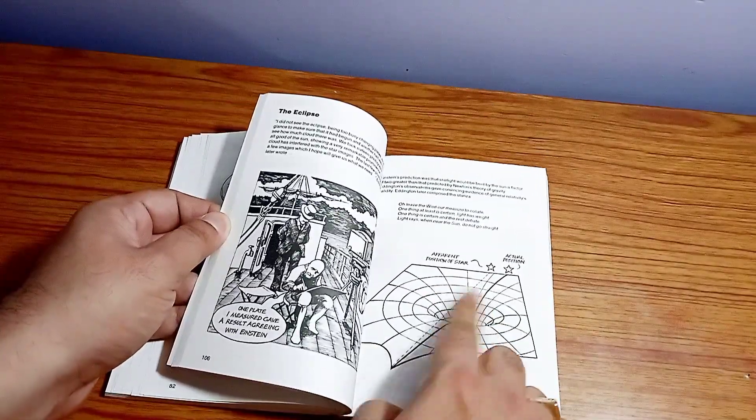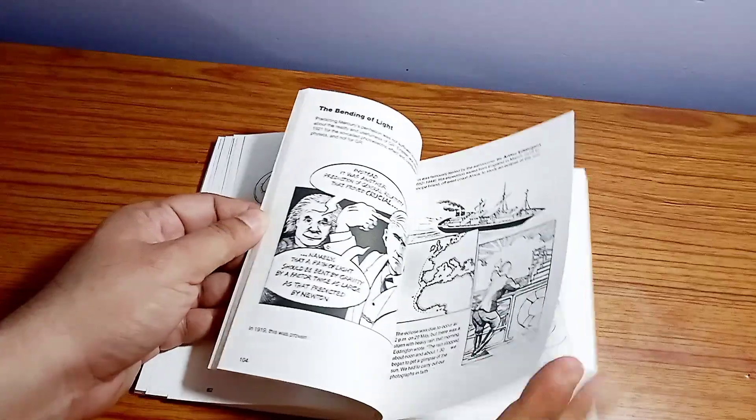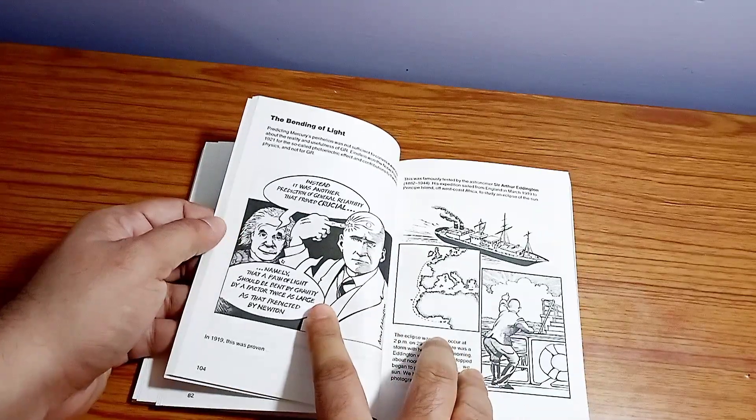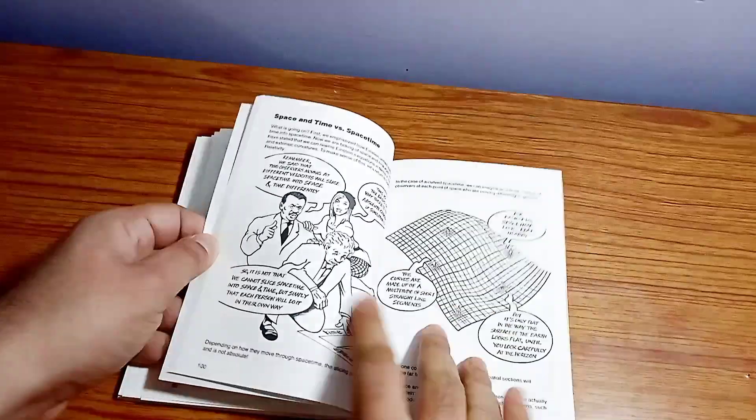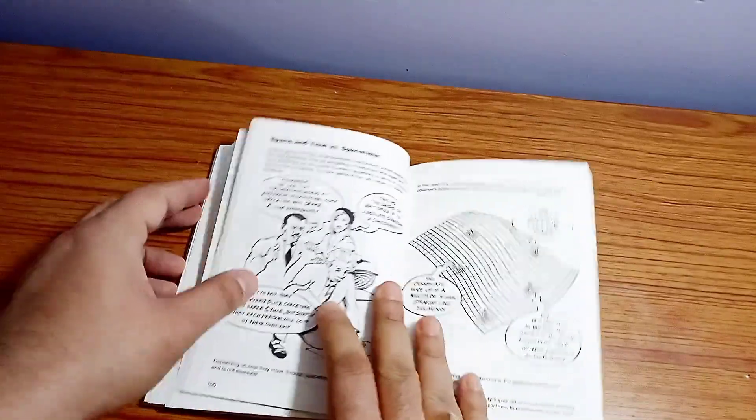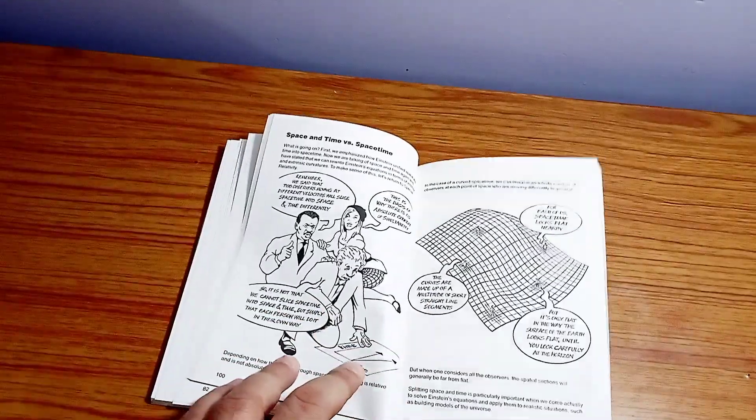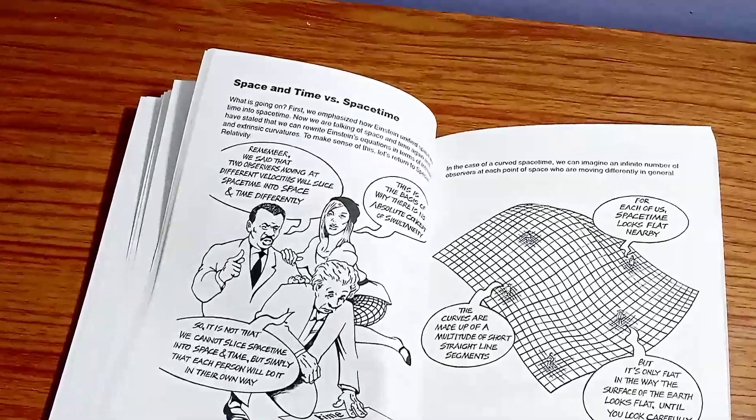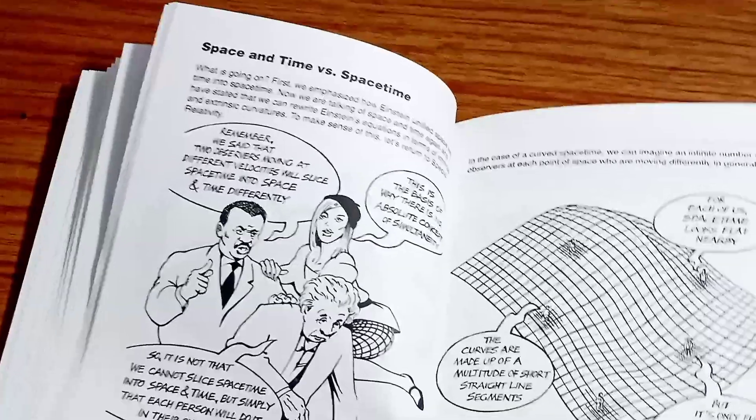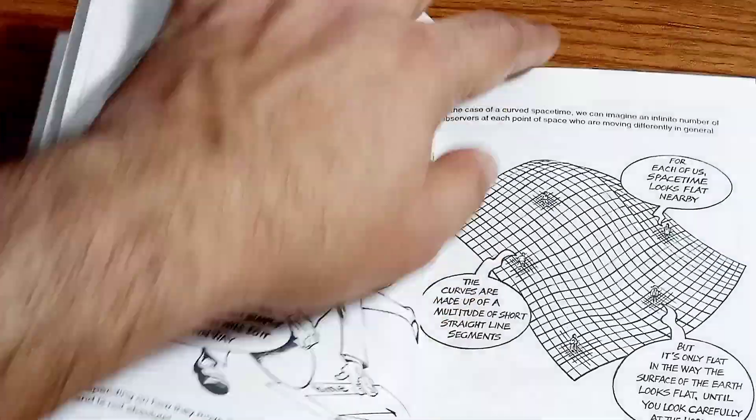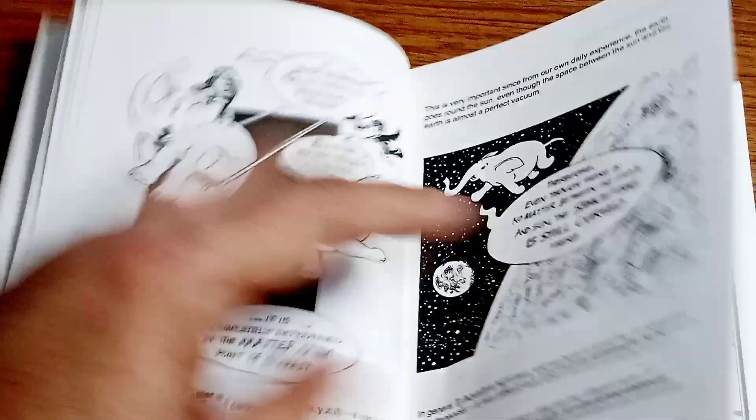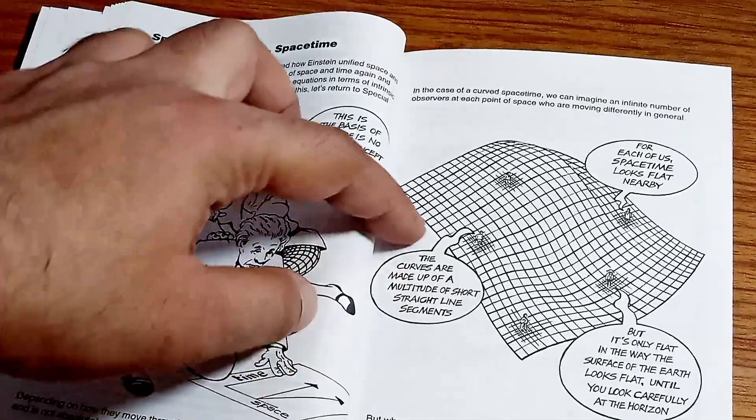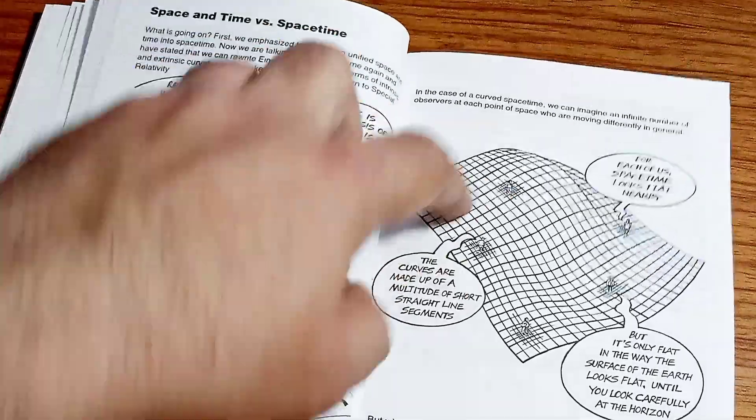The Eclipse, this is the deflection of Eddington's experiment. The bending of light is being covered. The space-time, space and time versus space-time. So here you can see that how Einstein's, when they unite space and time to space-time, how it really happens. So this is how it is. This is really wonderful. So the curves made of the multitude. This is how the curve space-time, the metric is being arranged.